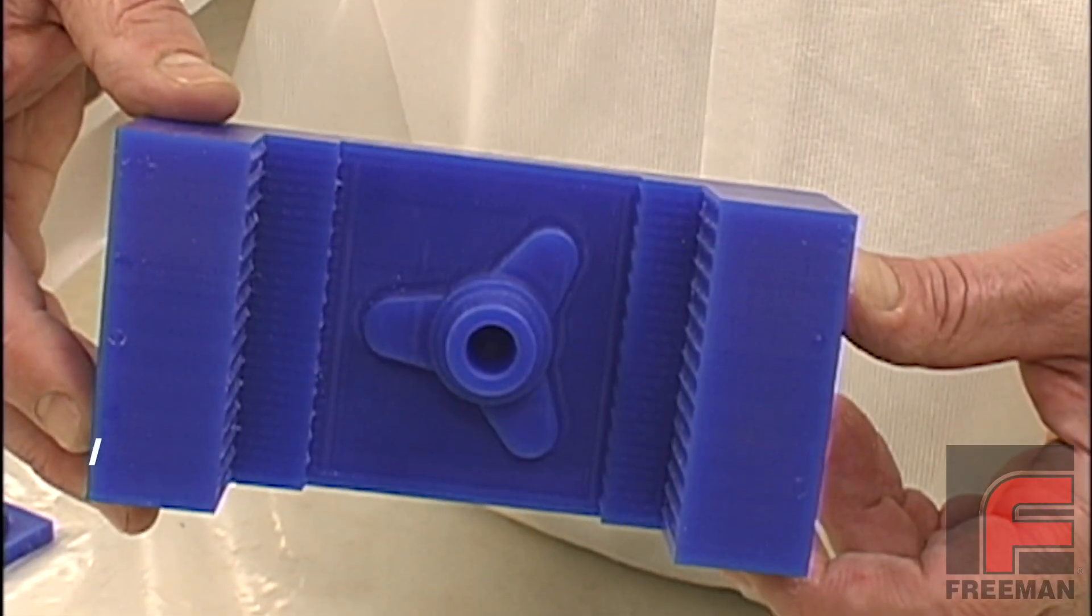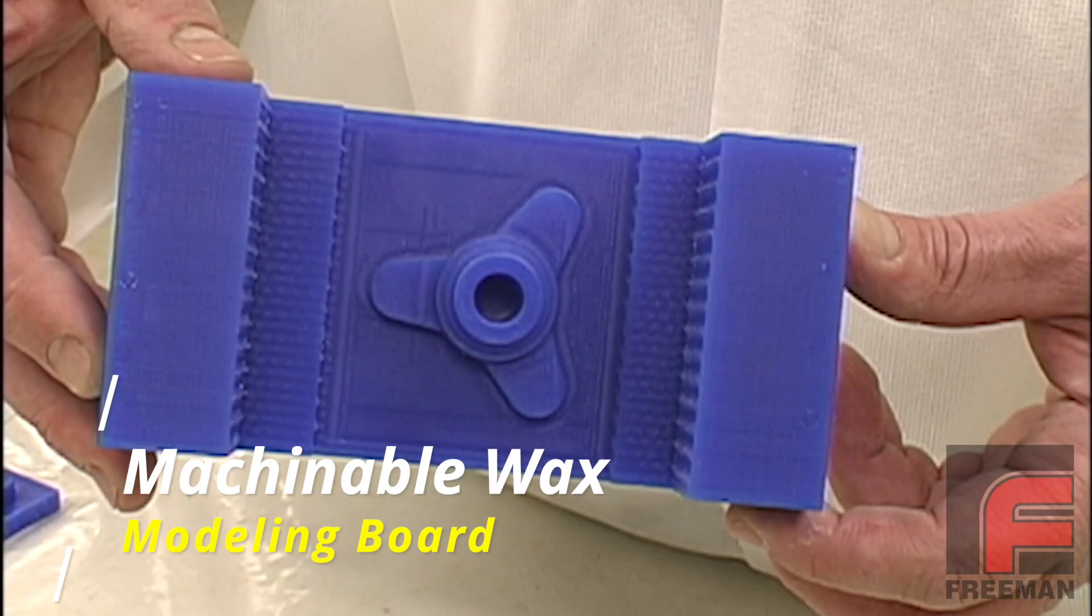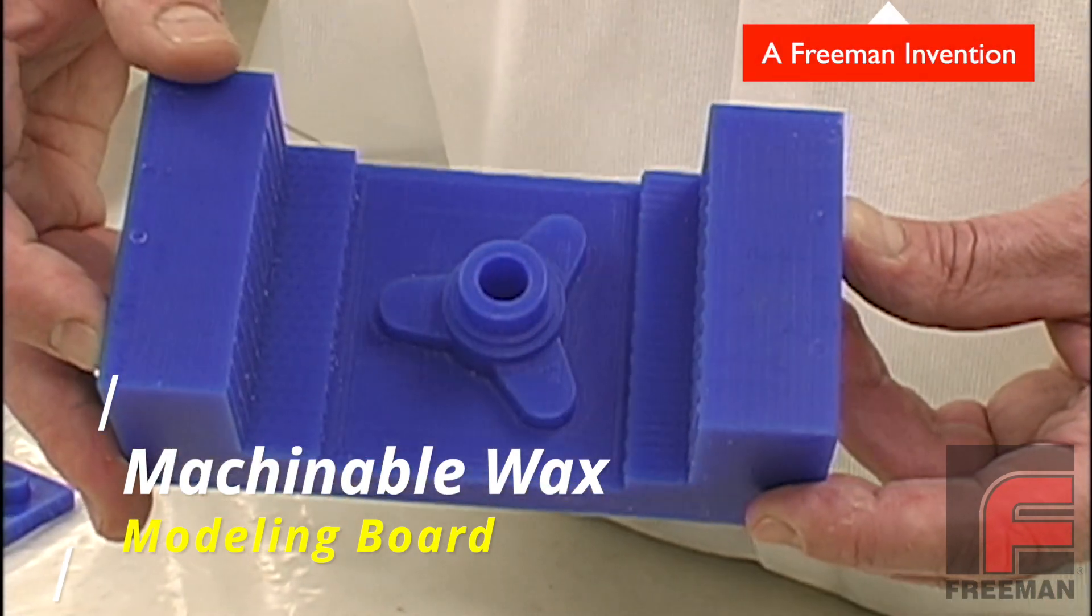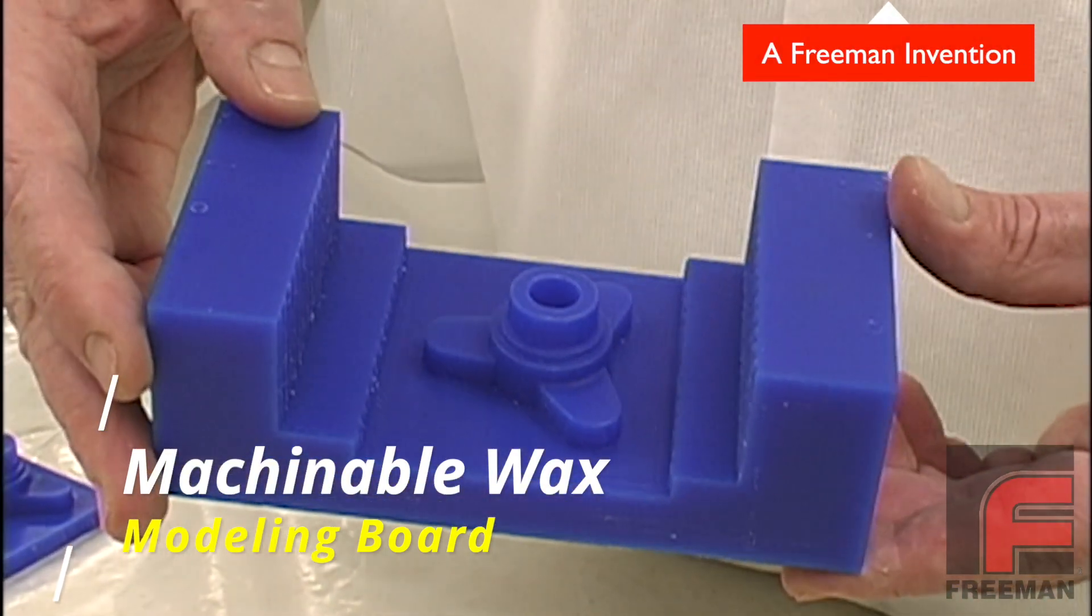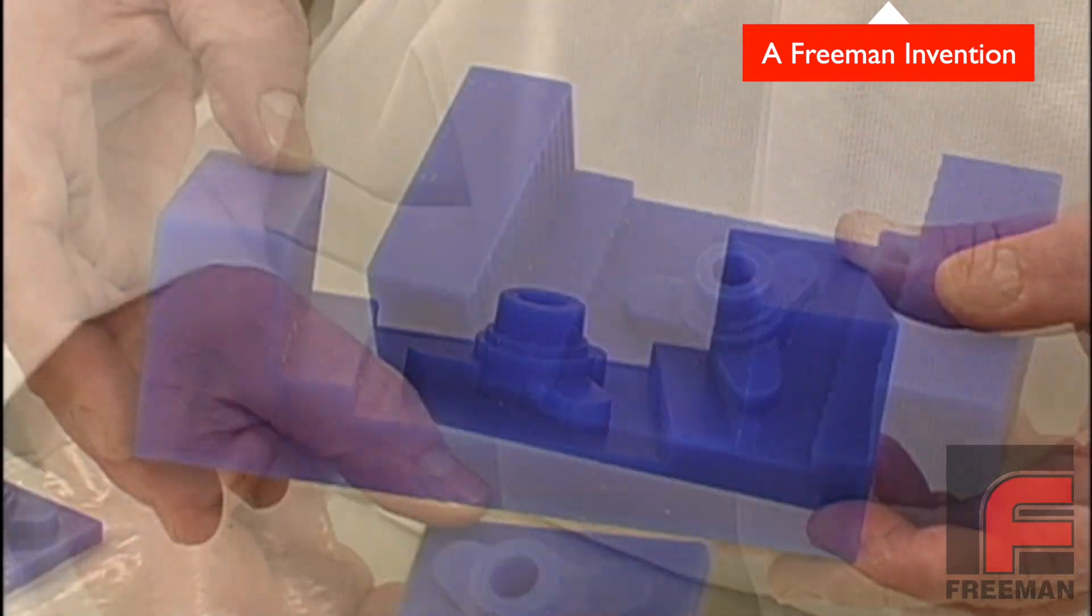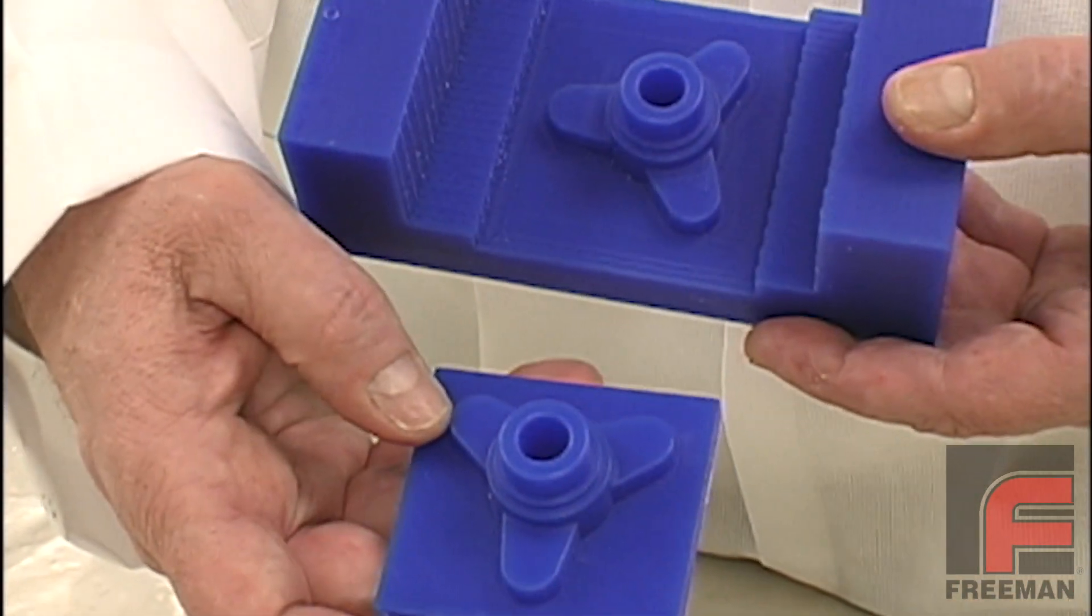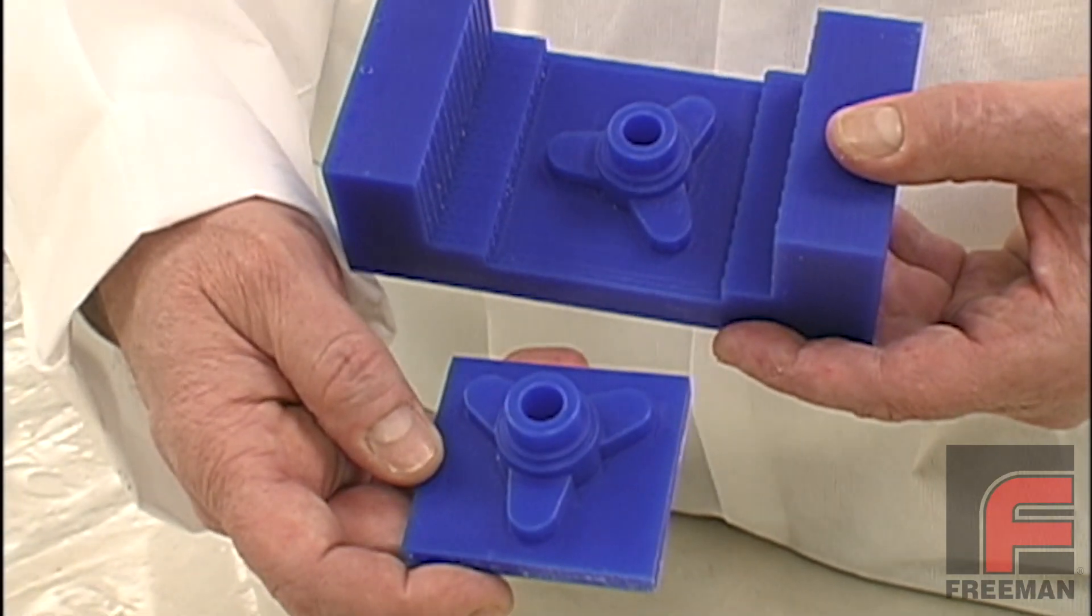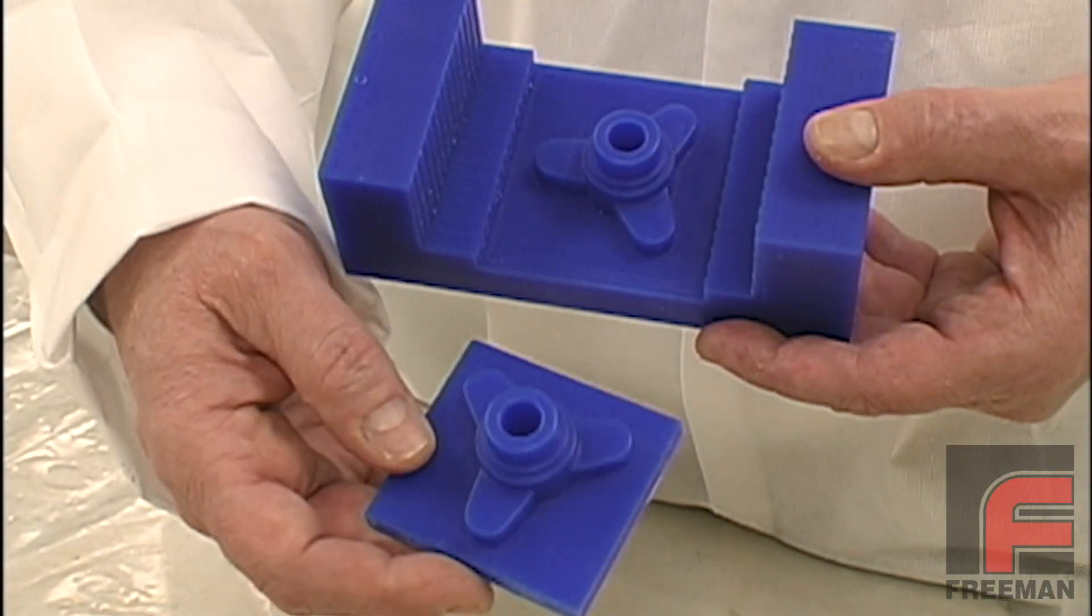We start off by machining our model. For this example, we're using Freeman's Machinable Wax because of its ease of machining and excellent surface finish. Our machined block looks like this. From here, we trim the model down to a smaller size, which will enable us to fit six models in a six-by-eight-inch mold.